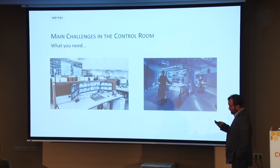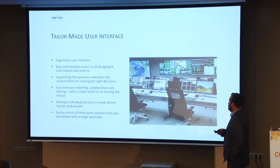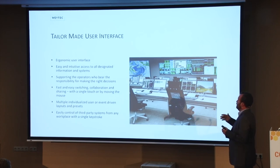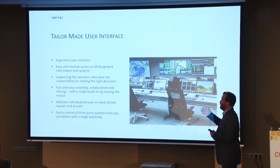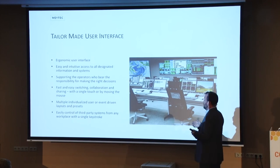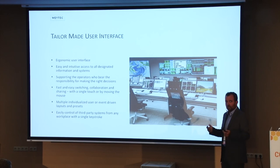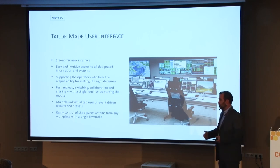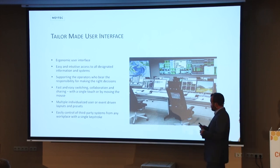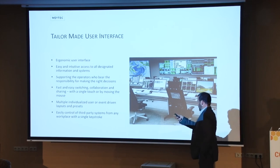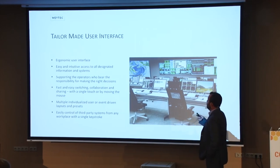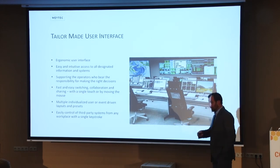What do you need to achieve a good result? One point is having a tailor-made user interface, and thinking about ergonomics — something not always taught but really important for users on eight- or ten-hour shifts. By ergonomics I mean how the displays are placed, how the desks are, whether you can sit or stand up, and the chairs. Then you need easy and intuitive access to all the information. You need a solution that supports operators bearing responsibility for making the right decision and guides them through the process. The solution must be fast — switching from one thing to another quickly — and you must think about collaboration: sharing information with other users.